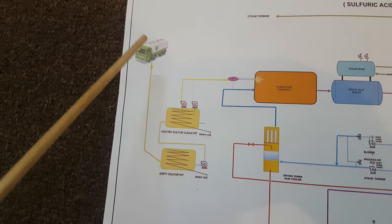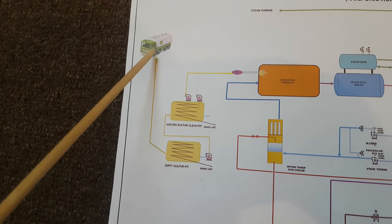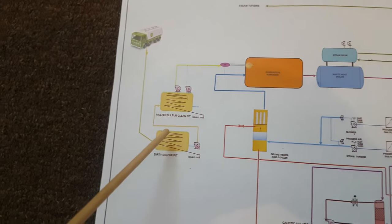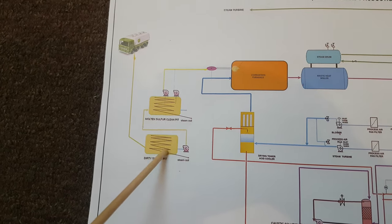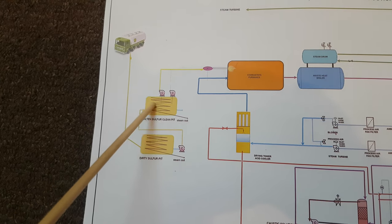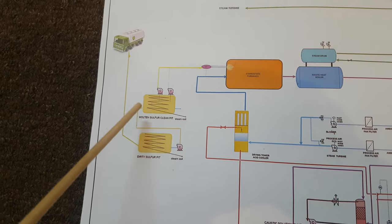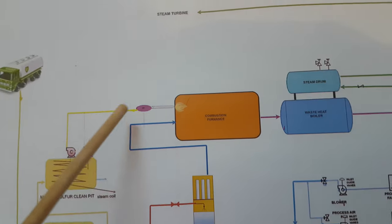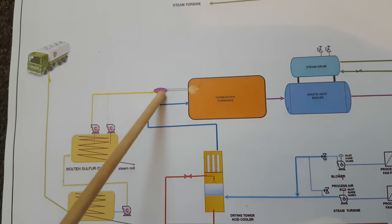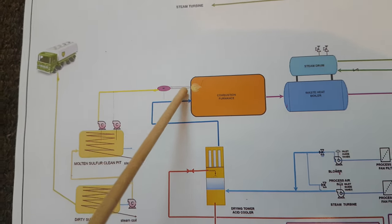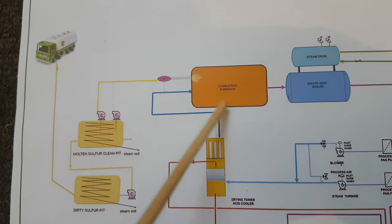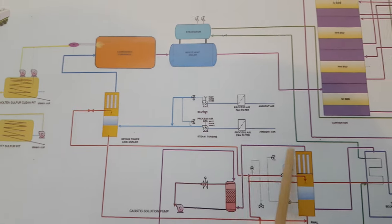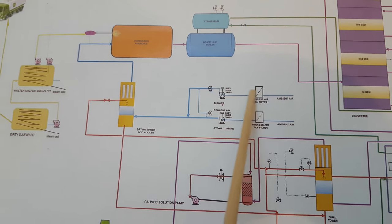In the sulfur road, we get molten sulfur or dry sulfur. We send molten sulfur to the dirty pit. If impurities are not present and sulfur quality is good, we can directly send it to the molten sulfur pit. From the molten sulfur pit, sulfur is fed to the combustion furnace. There is an atomizer and orifice plate which increases the pressure, and high-pressure sulfur goes to the combustion furnace where it spreads and vaporizes.